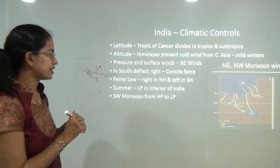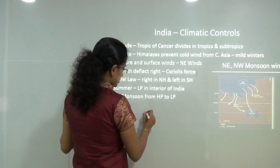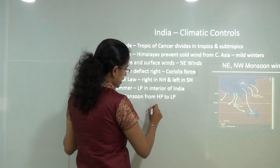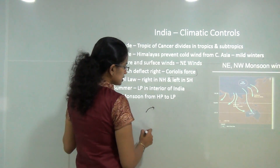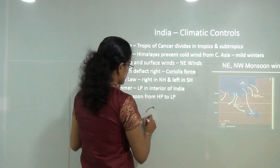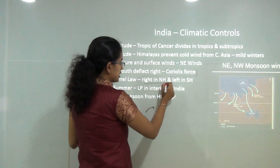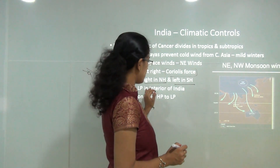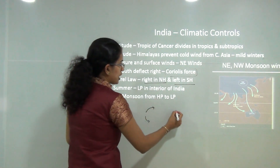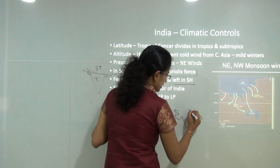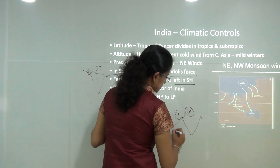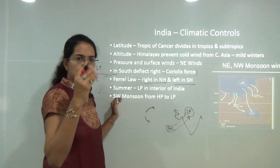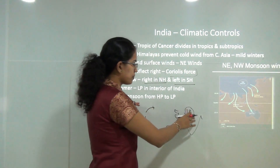Due to the Coriolis force, winds deflect towards the right in the Northern Hemisphere and towards the left in the Southern Hemisphere. In summers, there is a low pressure in central India. As a result, winds move from high pressure to low pressure; once they reach the regions of low pressure they reach saturation and drop down as rainfall.